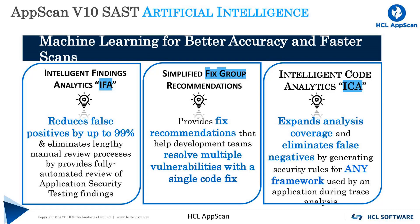In application number two, the deep scan findings identified almost 250,000 potential vulnerabilities. Again, IFA reduced it to about a thousand vulnerabilities and identified 103 fixed groups in the code to address them. And in application number three, the deep scan findings identified nearly 750,000 potential vulnerabilities. Astoundingly, IFA reduced these to just 483 real results and identified 42 fixed groups.